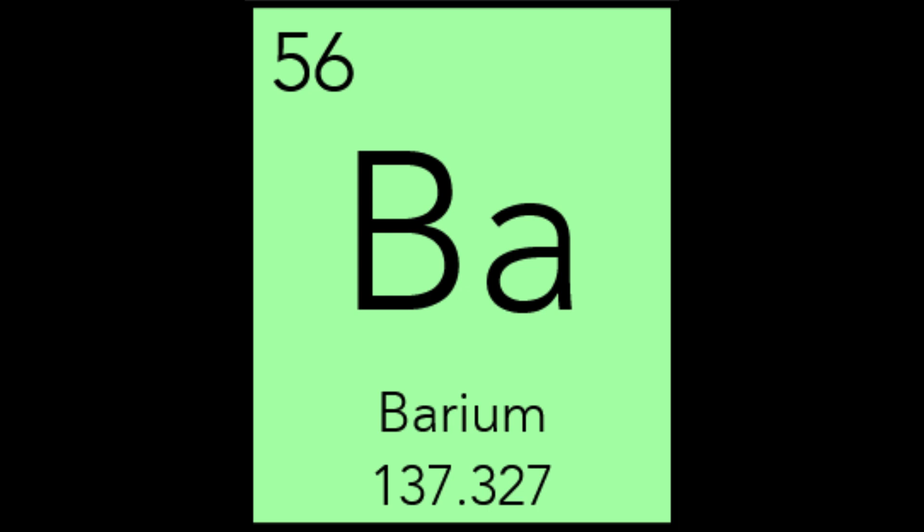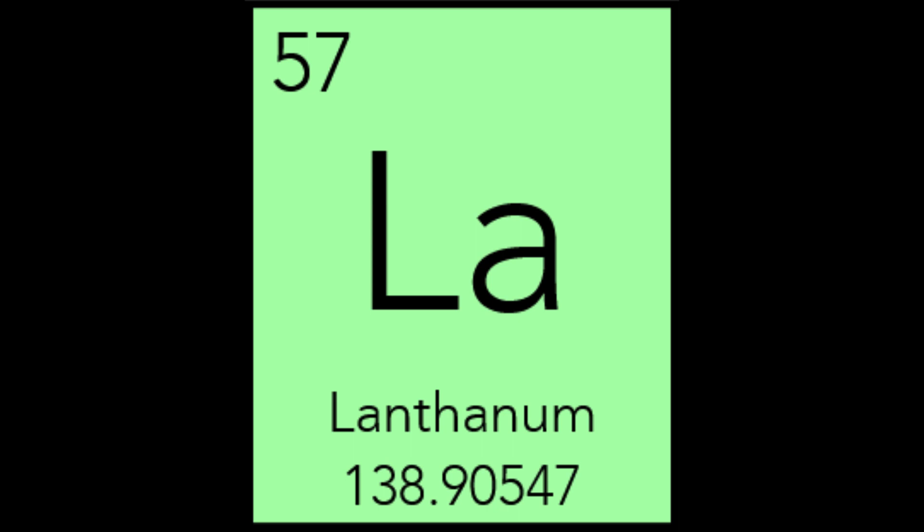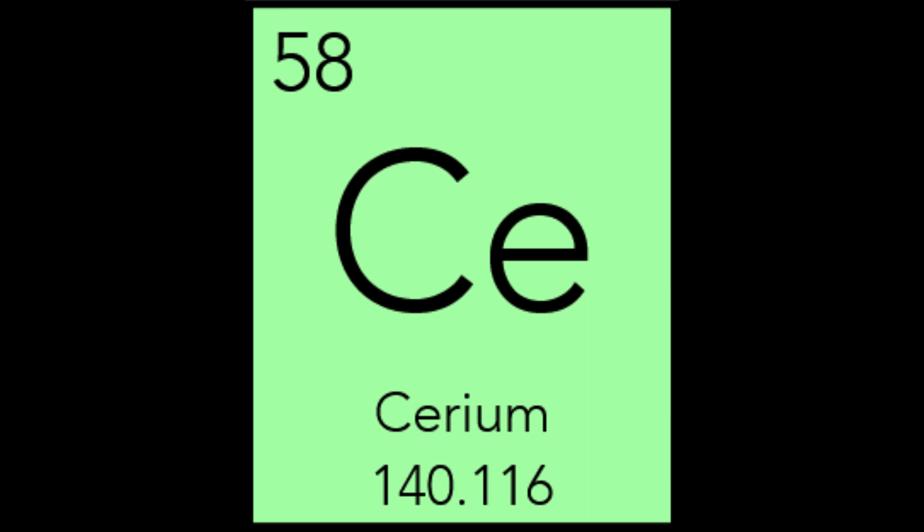Lanthanum comes from the Greek lanthanein, which means to lie hidden, because it occurred as an impurity in cerium nitrate. Lanthanum gives its name to the sixth-period transition metals called the lanthanide series. Lanthanum compounds are used as catalysts, additives in glass, ignition elements in lighters, and as electrodes. Cerium was named after the asteroid Ceres, discovered two years earlier, which was named after the Roman goddess of fertility Ceres, and has since been given the status of dwarf planet. The word Ceres is derived from the Proto-Indo-European root meaning to grow, and we get modern words like cereal from it. Cerium is used in applications like polishing glass, ferrocerium lighters, and electronic applications.